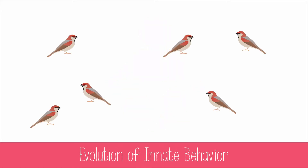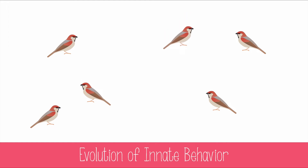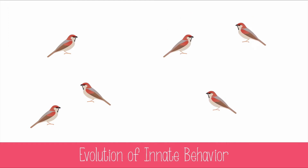Because innate behaviors are genetically controlled, the evolution of an innate behavior in a population will be quite slow. Natural selection would have to favor a specific behavior pattern over many generations for the change to occur in the whole species.